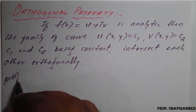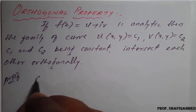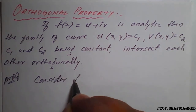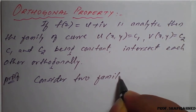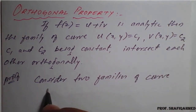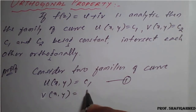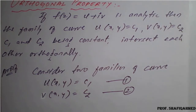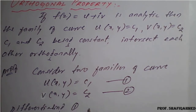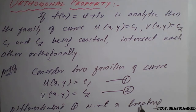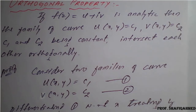That is what we have to prove. We will see the proof. Consider two families of curves: u(x, y) = c1, equation number 1, and v(x, y) = c2. Now, differentiating equation 1 with respect to x, treating y as a function of x.